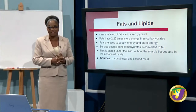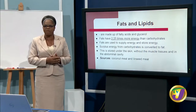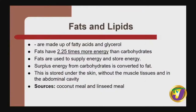Fats and lipids are made up of fatty acids and glycerol. Fats have 2.25 times more energy than carbohydrates and are used to supply and store energy. Surplus fats are stored underneath the skin, and surplus energy from carbohydrates is converted to fat. Sources of fat for farm animals include cottonseed meal, linseed meal, and fish oil, for example for dairy cattle.